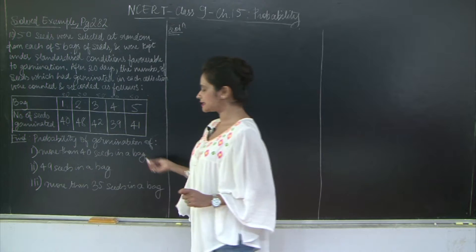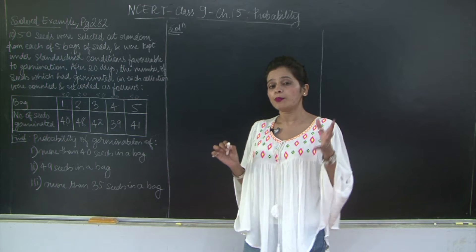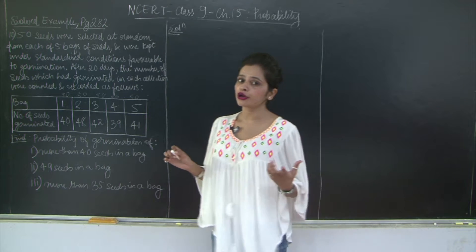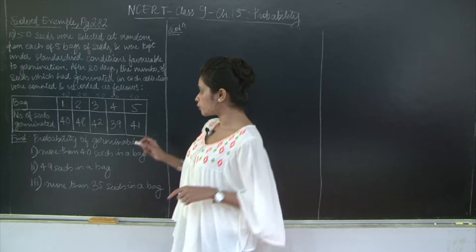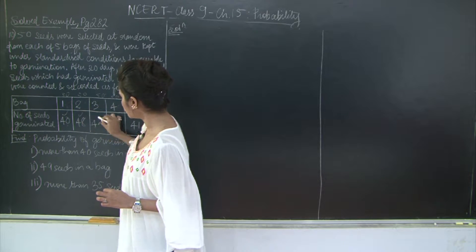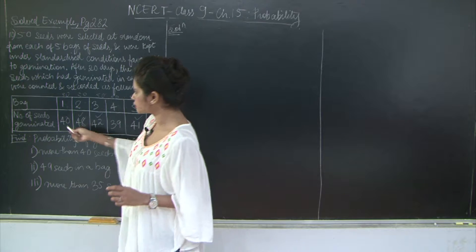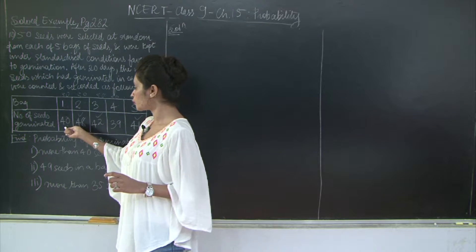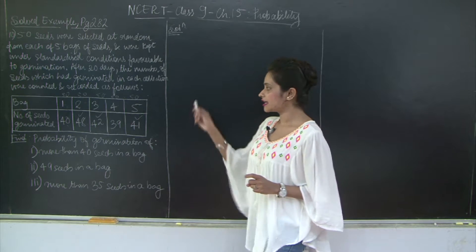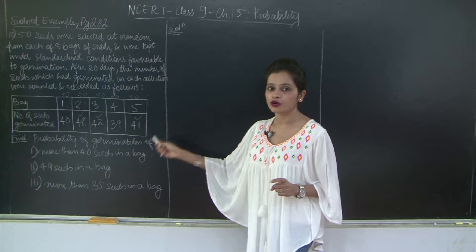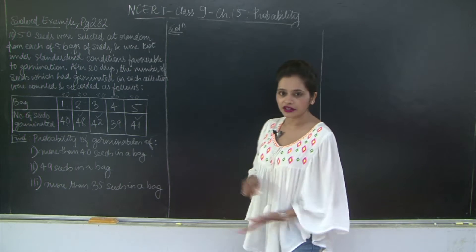The first sub-question: more than 40 seeds in a bag. We have to find the probability based on the number of bags in which more than 40 seeds germinated. The qualifying bags are those with 41 (bag 5), 42 (bag 3), and 48 (bag 2) — that is 3 bags. We won't include bag 1 since 40 is not more than 40. So out of 5 total bags, 3 qualify.